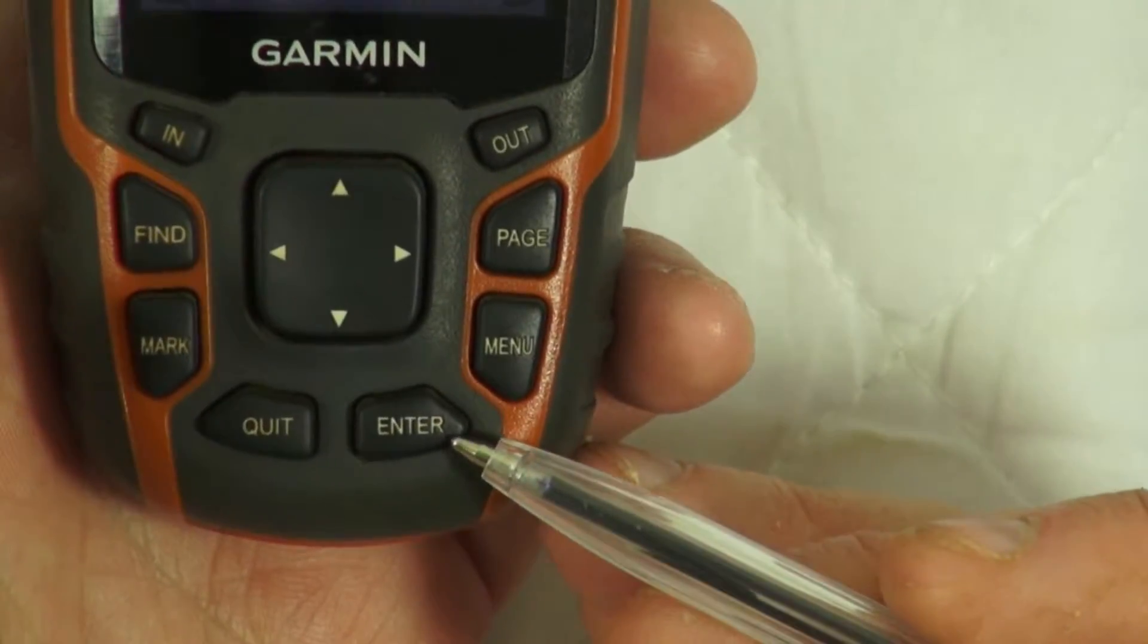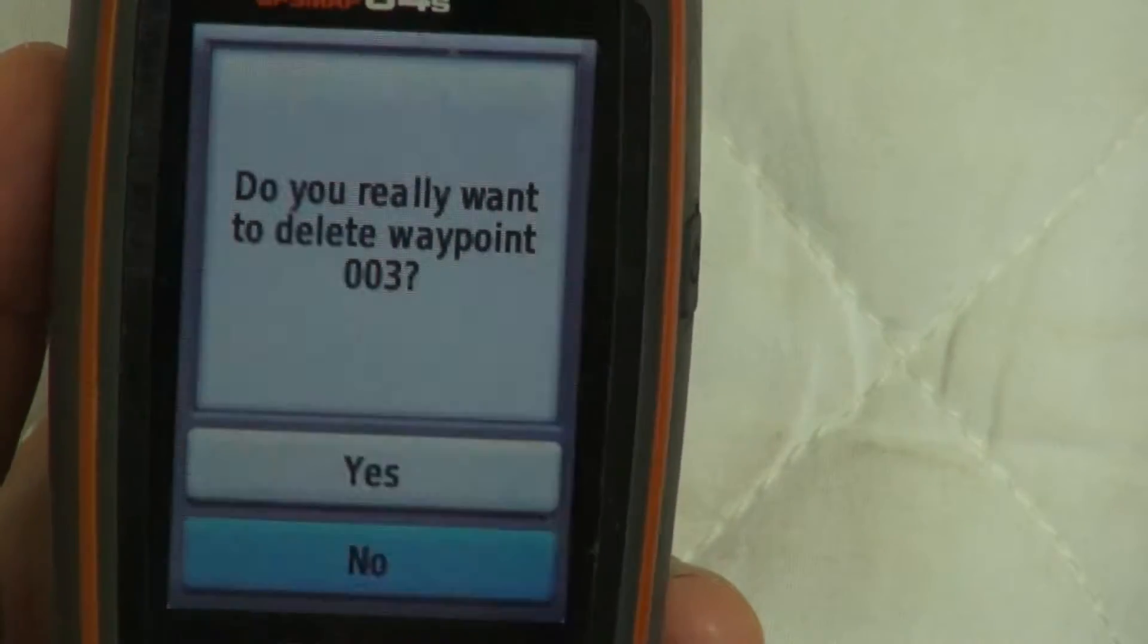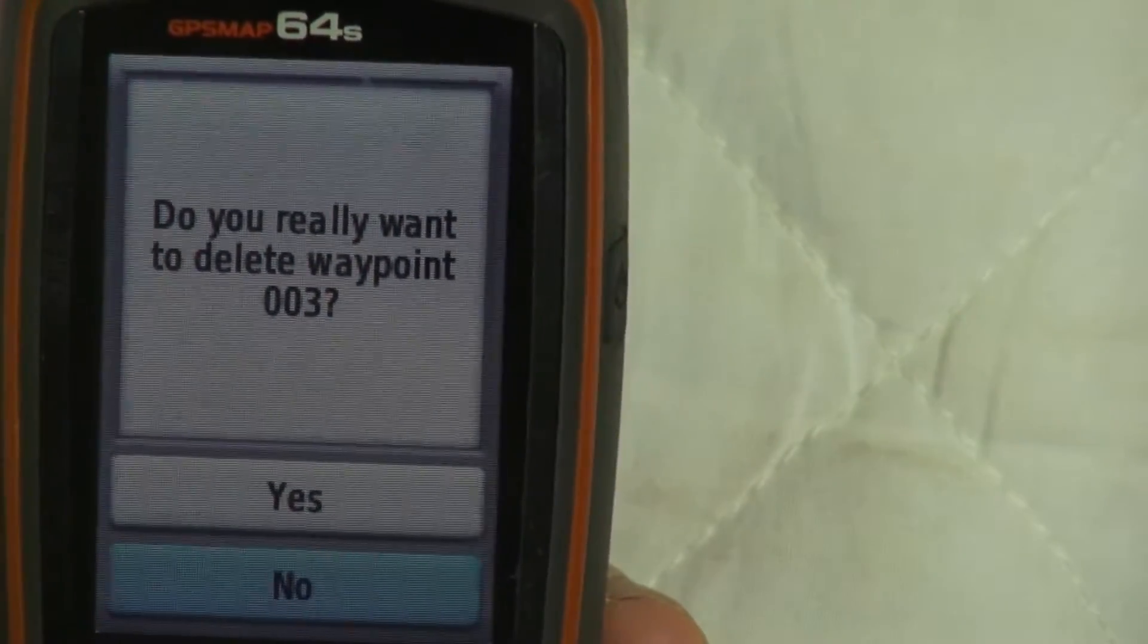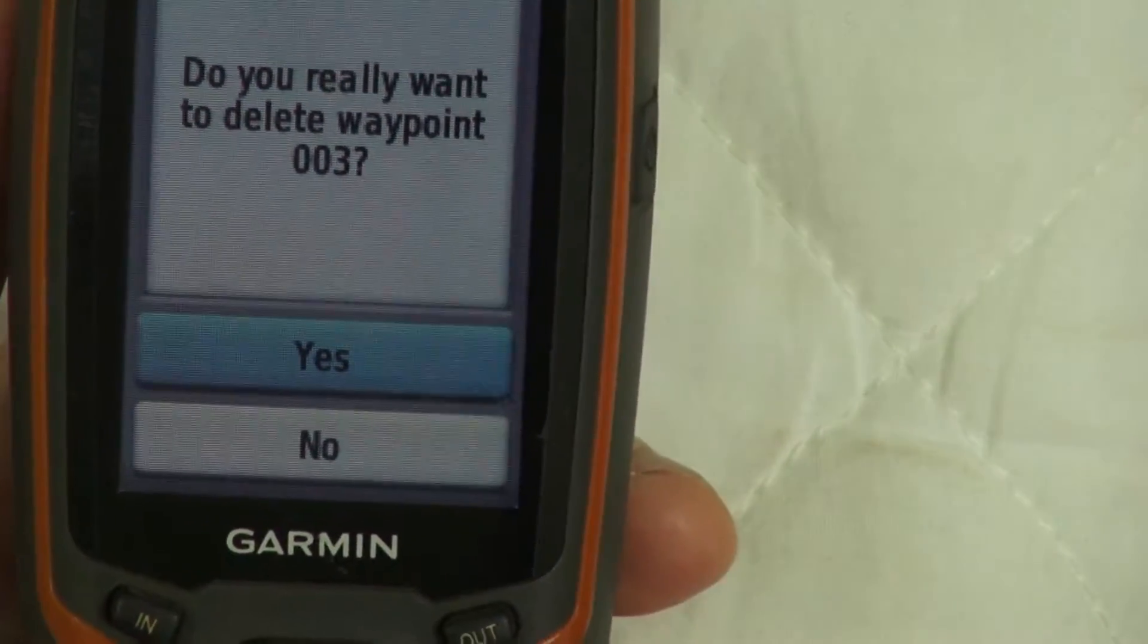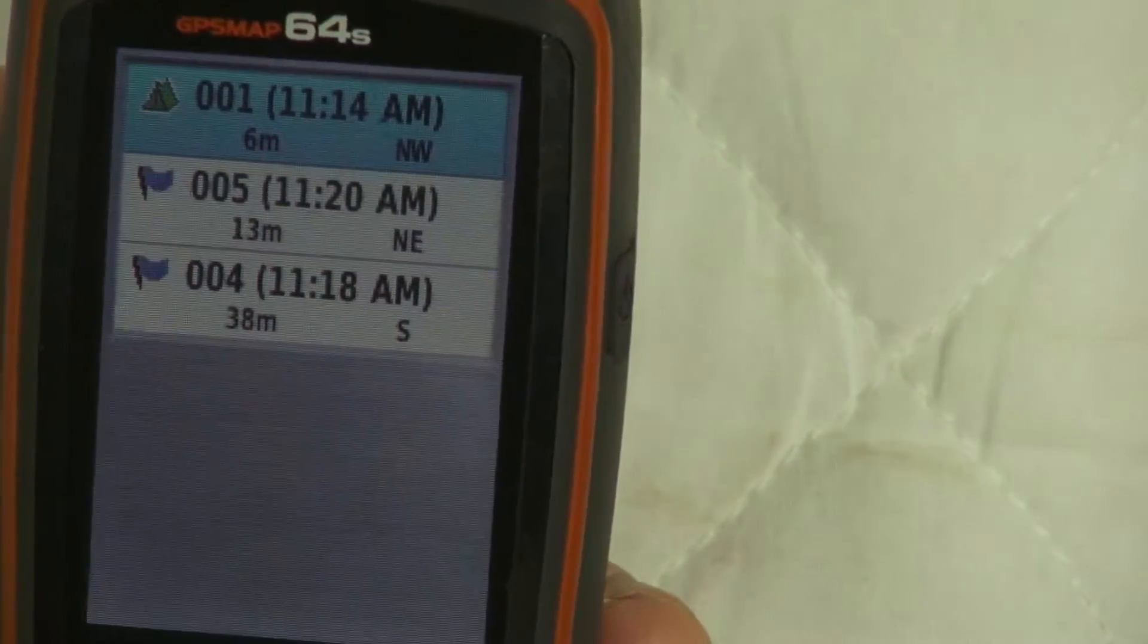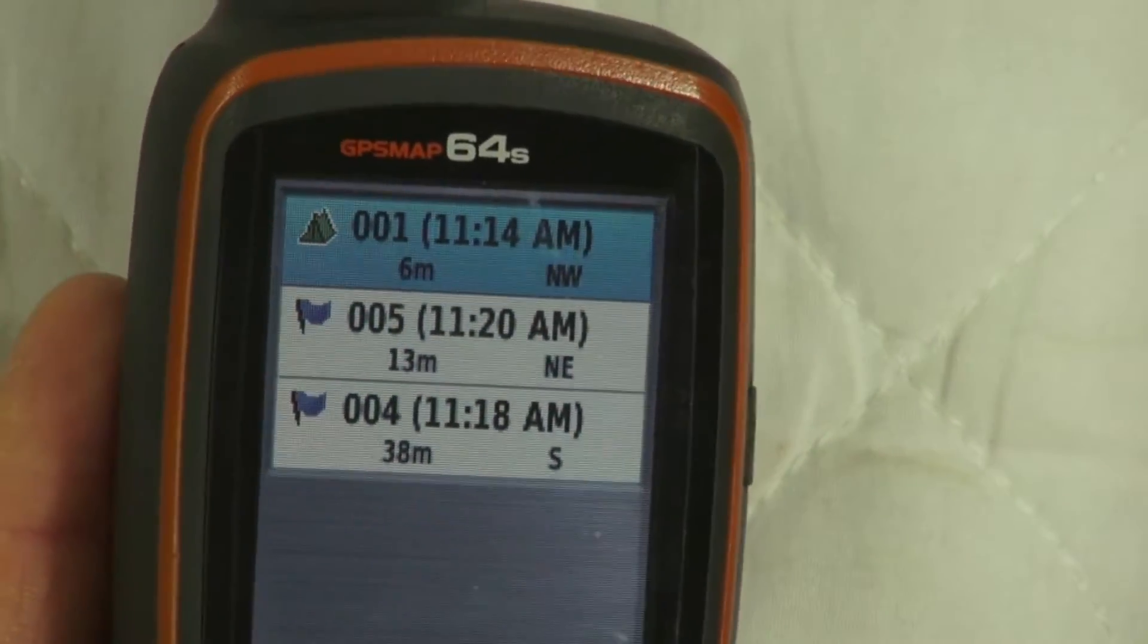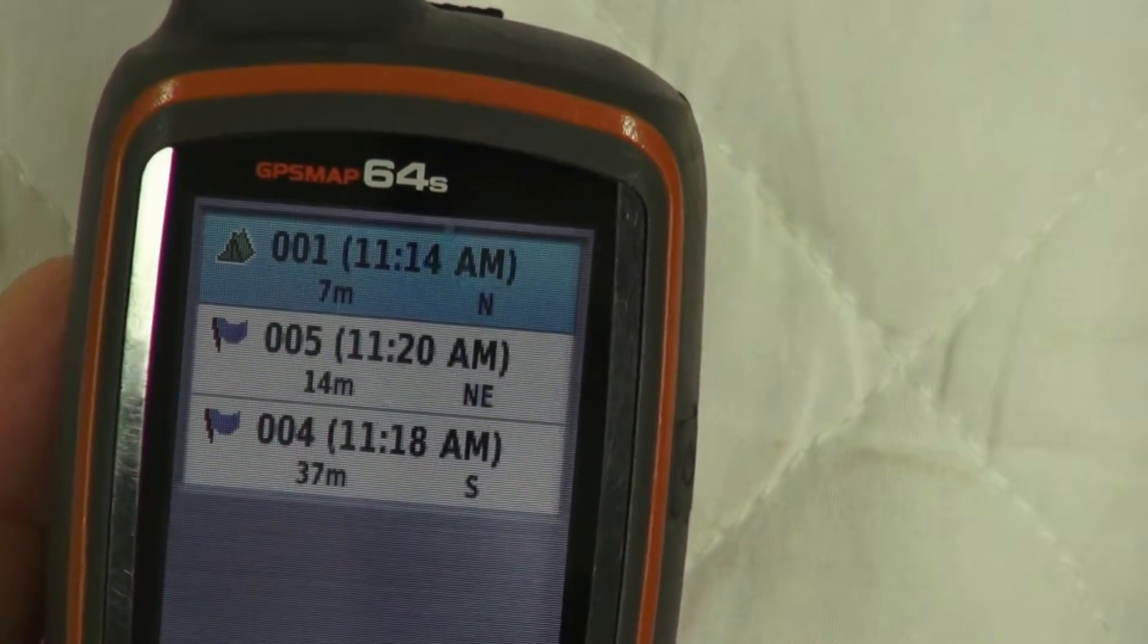If you want to delete it, just press enter. It'll ask you 'are you sure you really want to delete it?' Using the rocker, highlight yes and press enter. Now you can see the waypoint is deleted.